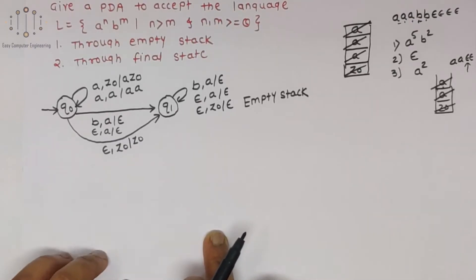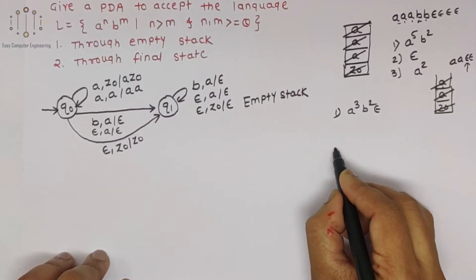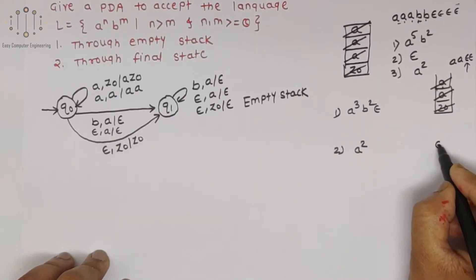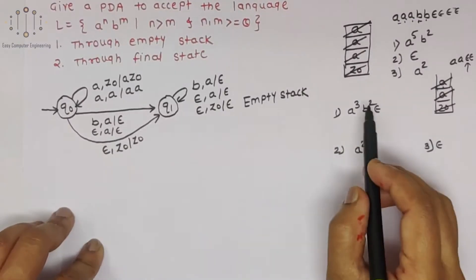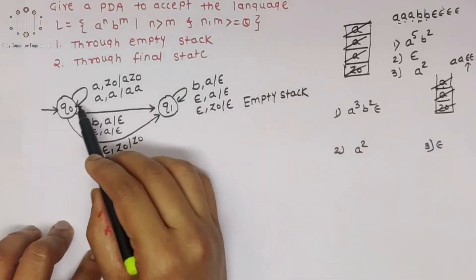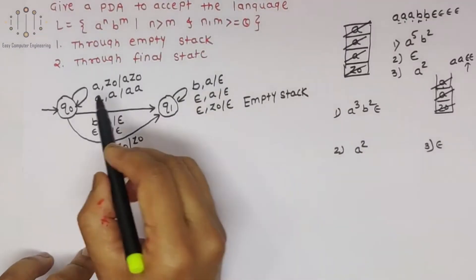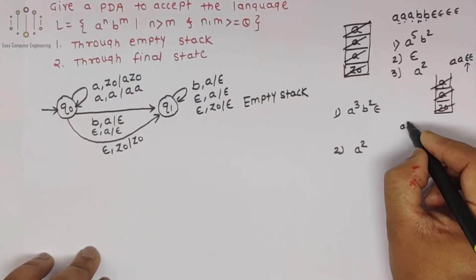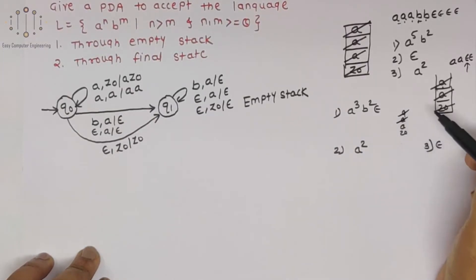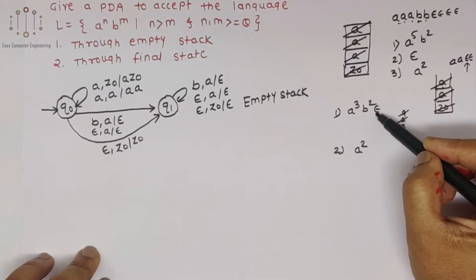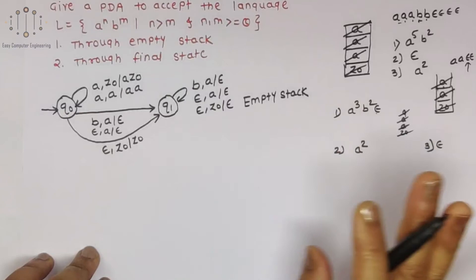Now we will check how this works for a^3 b^2, a^2 alone, and epsilon — these are the 3 cases that should be accepted. For a^3 b^2: push a three times, stack becomes a a a Z0. Then move to q1 for b, pop a two times for the two b's. For next epsilon, stack has a, pop it. For next epsilon, stack has Z0, pop it — empty stack, so this string is accepted.